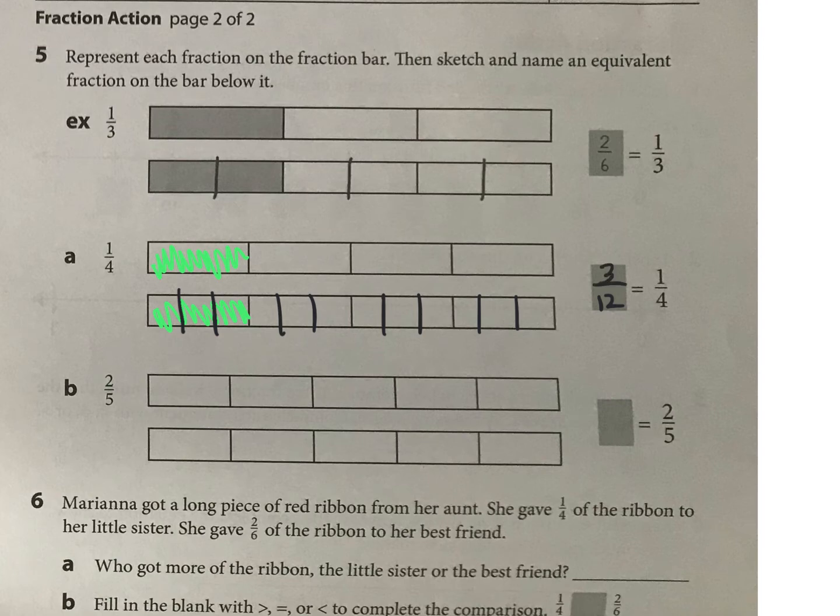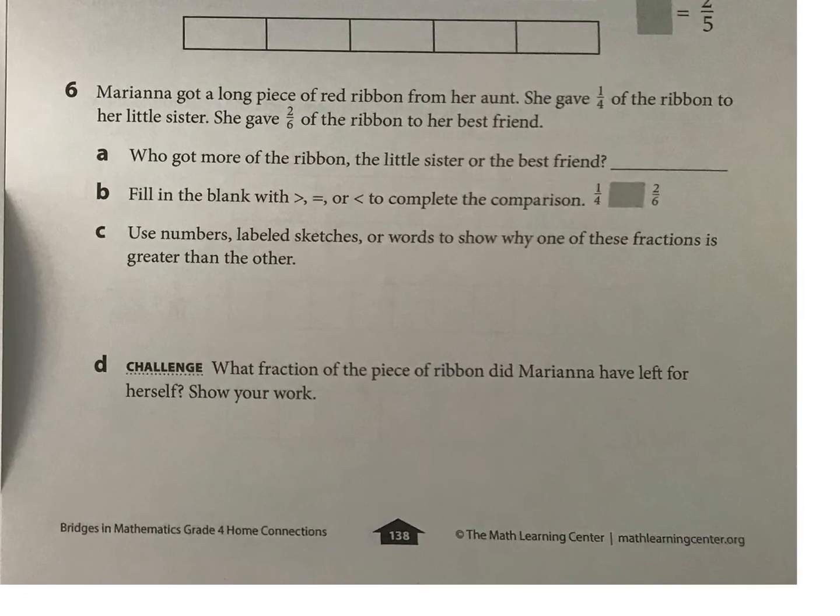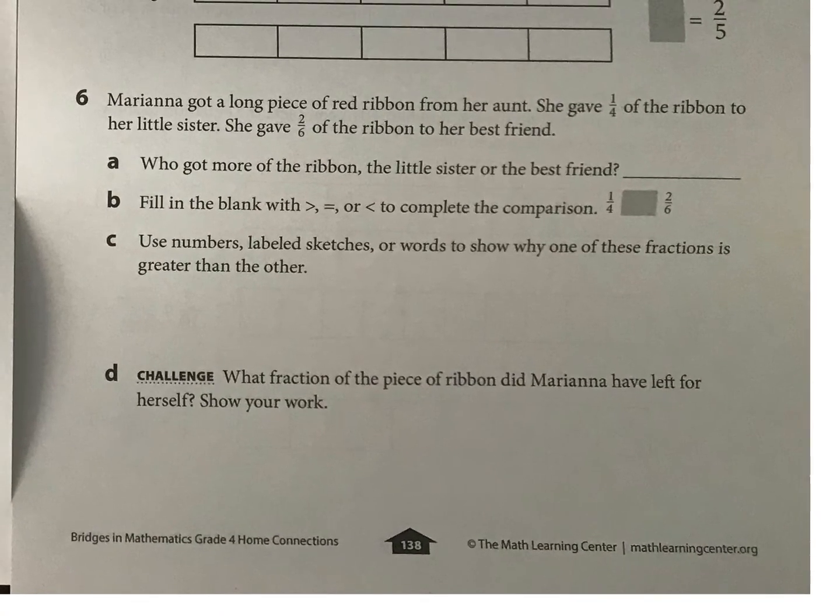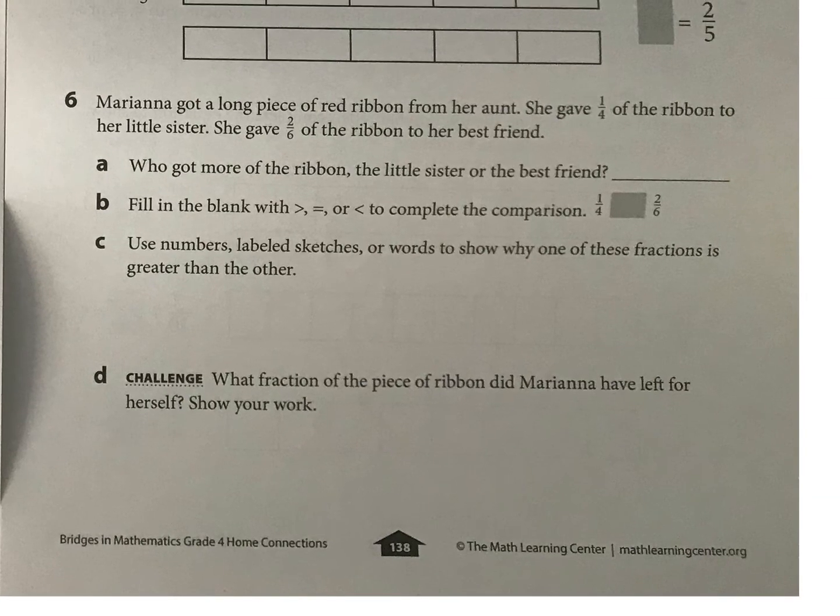And then this last piece, we have Mariana. So Mariana's got a long piece of red ribbon from her aunt. She gave one fourth of the ribbon to her sister, and two sixths to her best friend. So who got more, the little sister or the best friend?